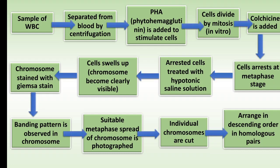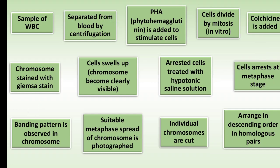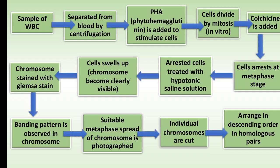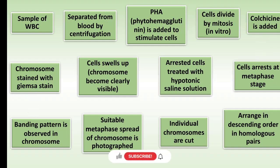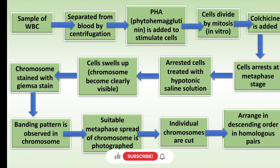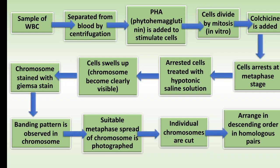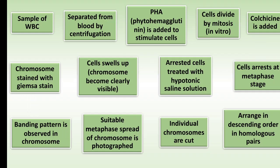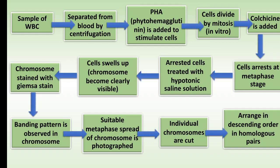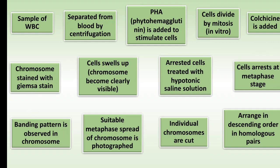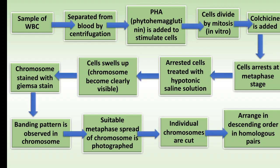After adding the hypotonic saline solution, cells swell up, and due to that swelling, chromosomes become clearly visible. You will be able to clearly see the chromosomes under the microscope. Those chromosomes are then stained with Giemsa stain, and after staining, the banding pattern will be observed in the chromosomes.